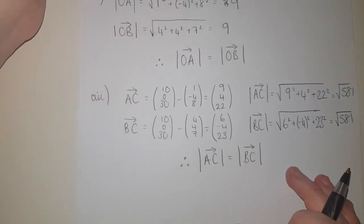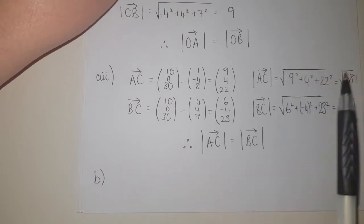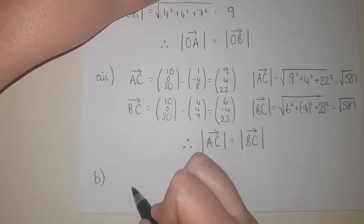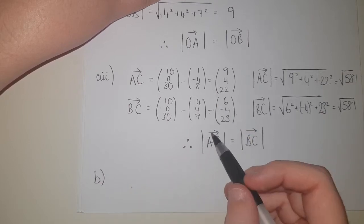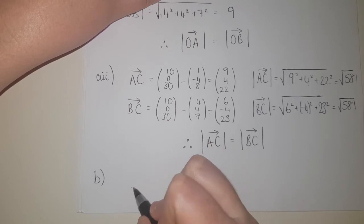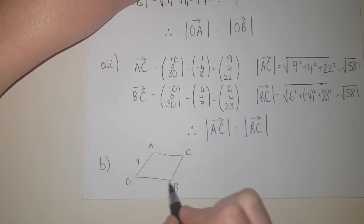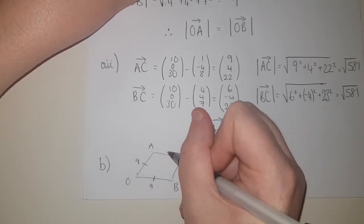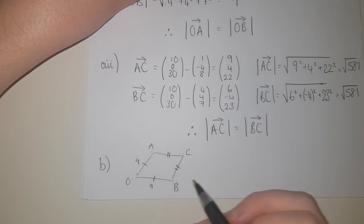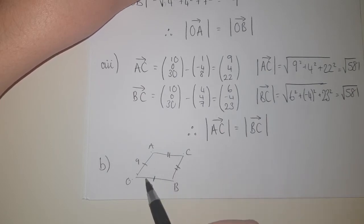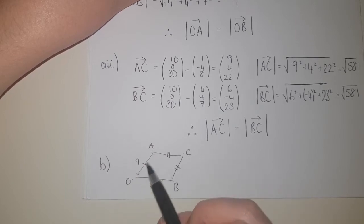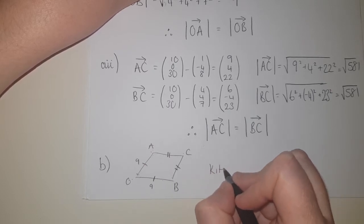For part B, we're describing the quadrilateral OACB. We know OA and OB are both length 9, and AC and BC are the same length. So we have a four-sided shape where two pairs of adjacent sides are equal — that makes it a kite.